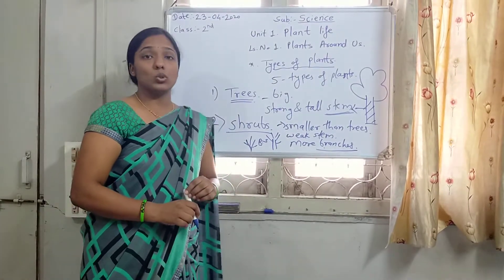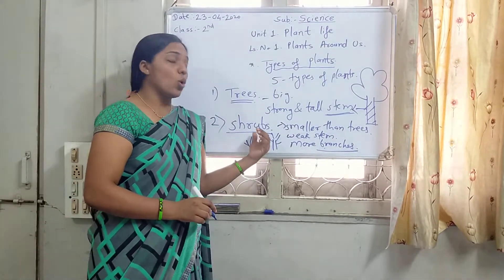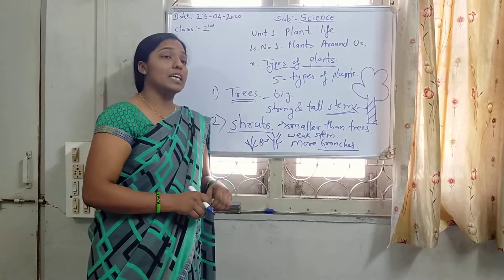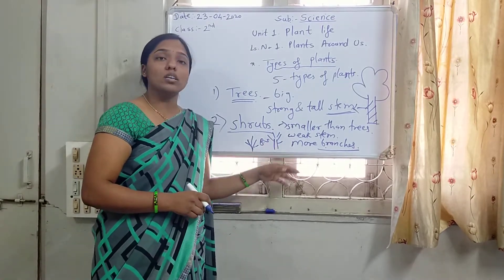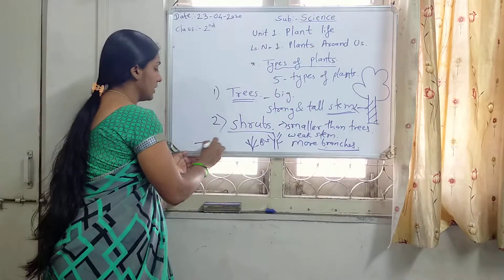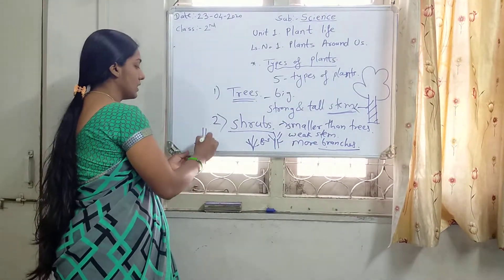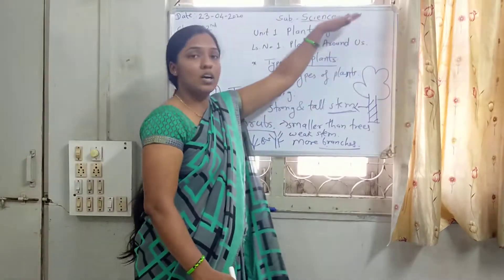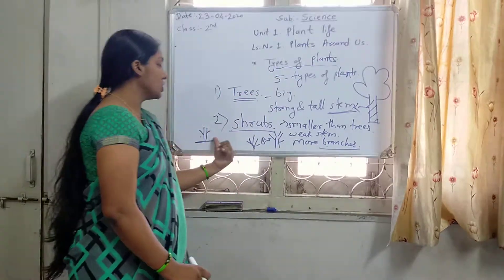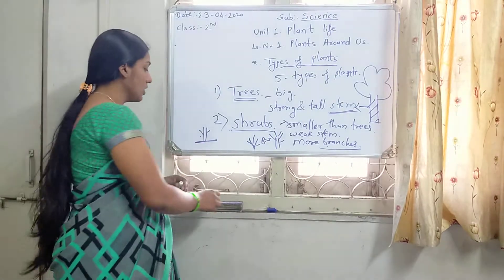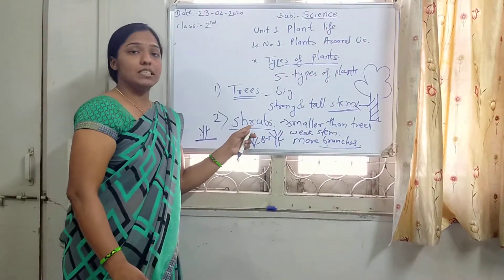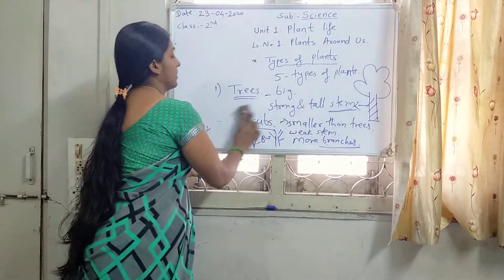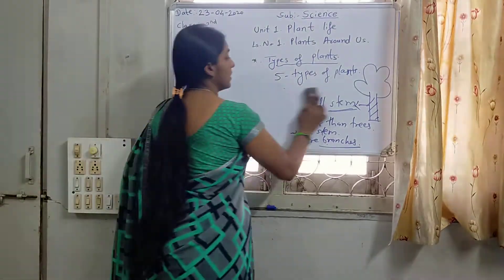The example of shrubs is Tulsi and Rose. Some flower plants are called shrubs. They grow near the ground, while trees grow very tall. Shrubs grow near the ground. Examples are Tulsi and Rose.